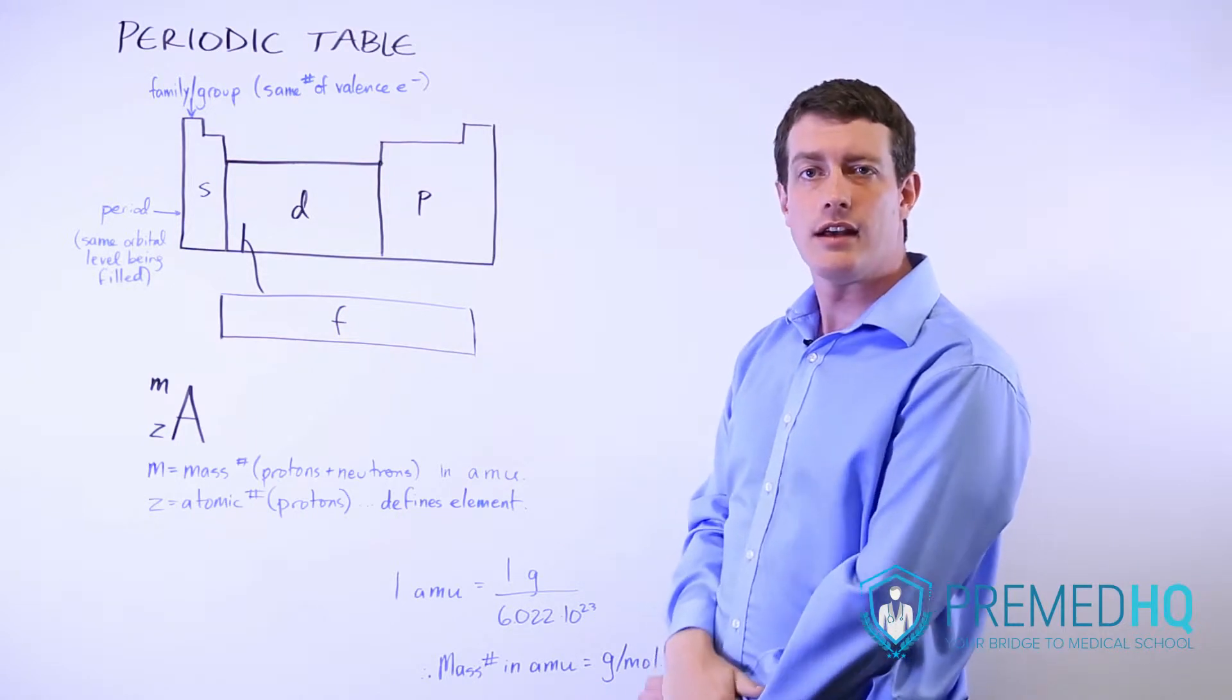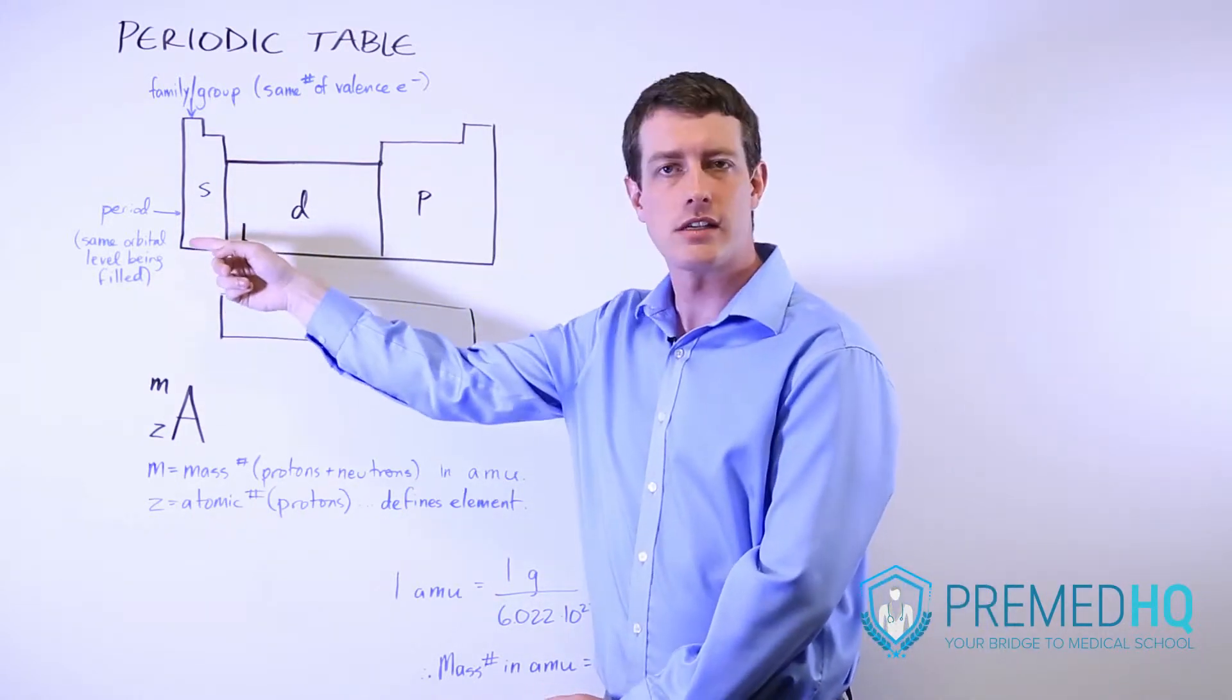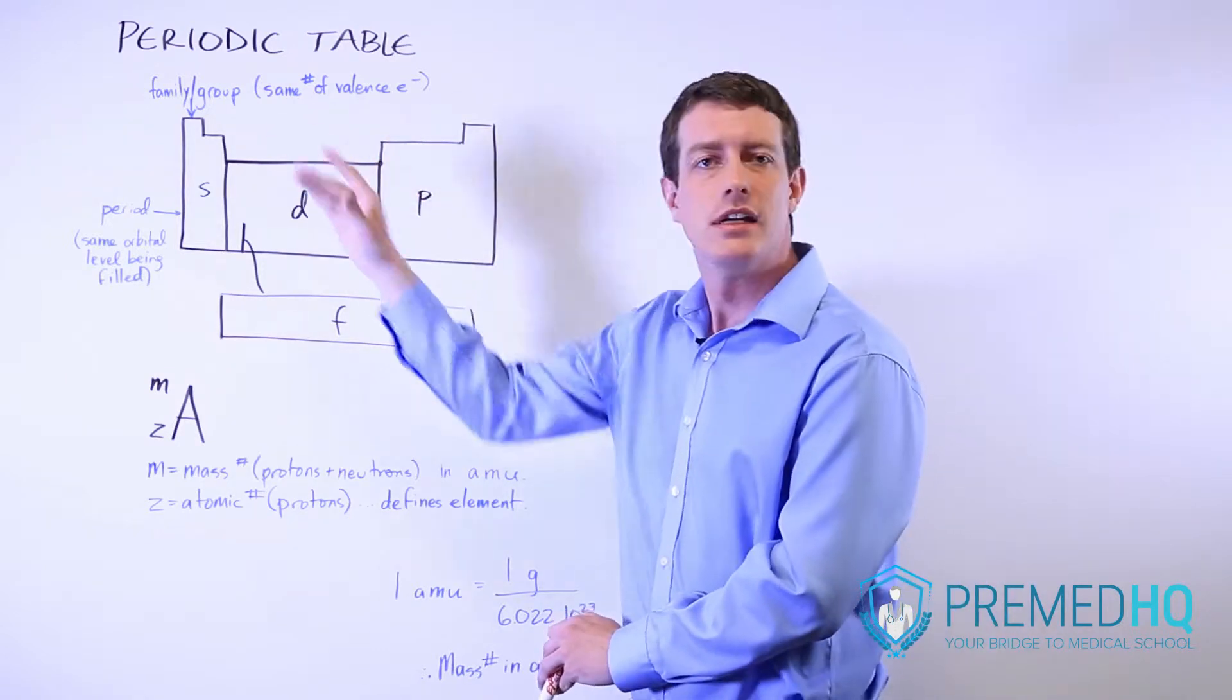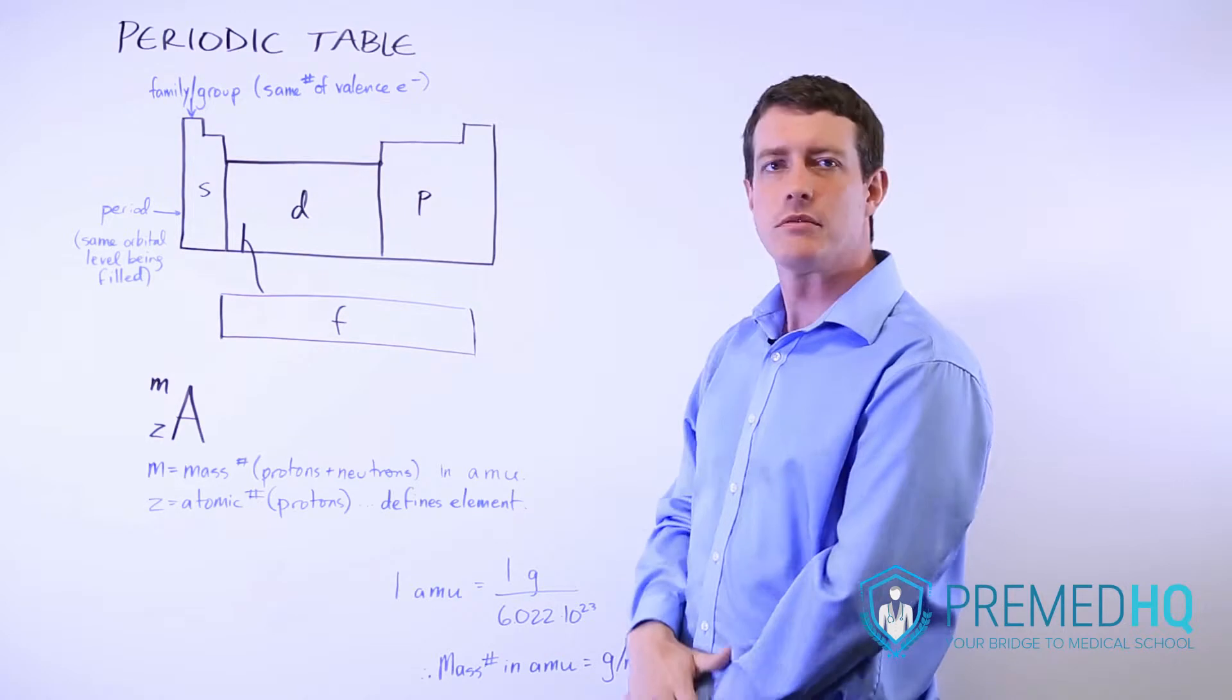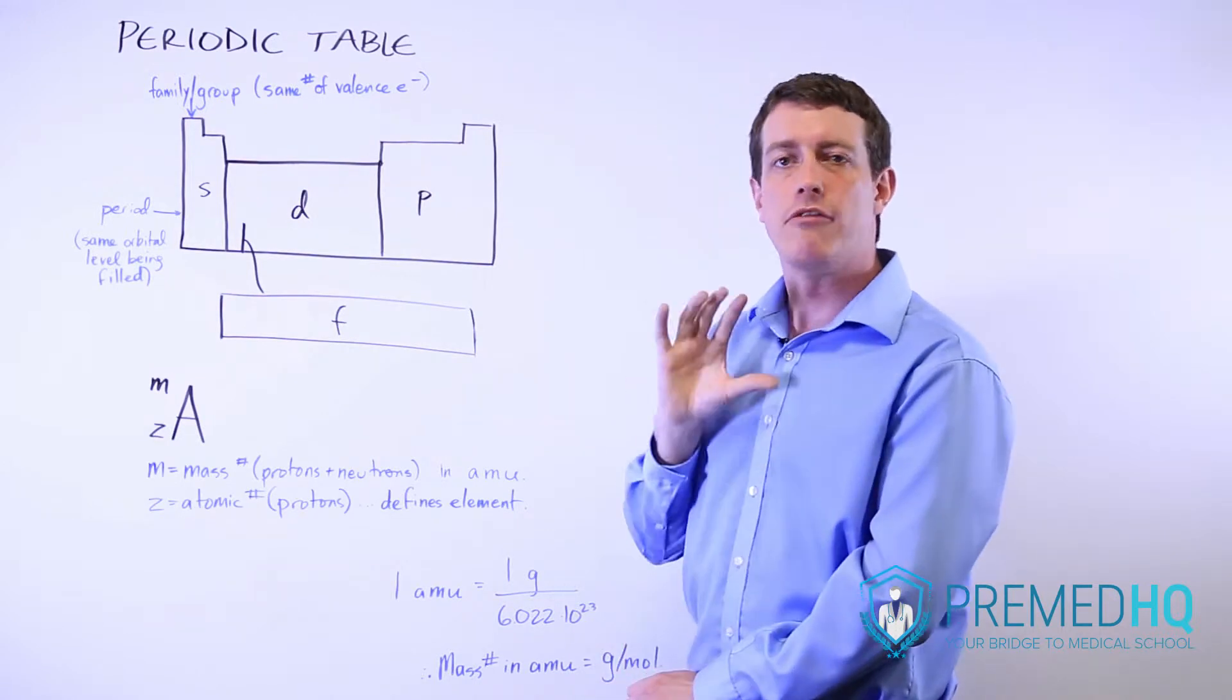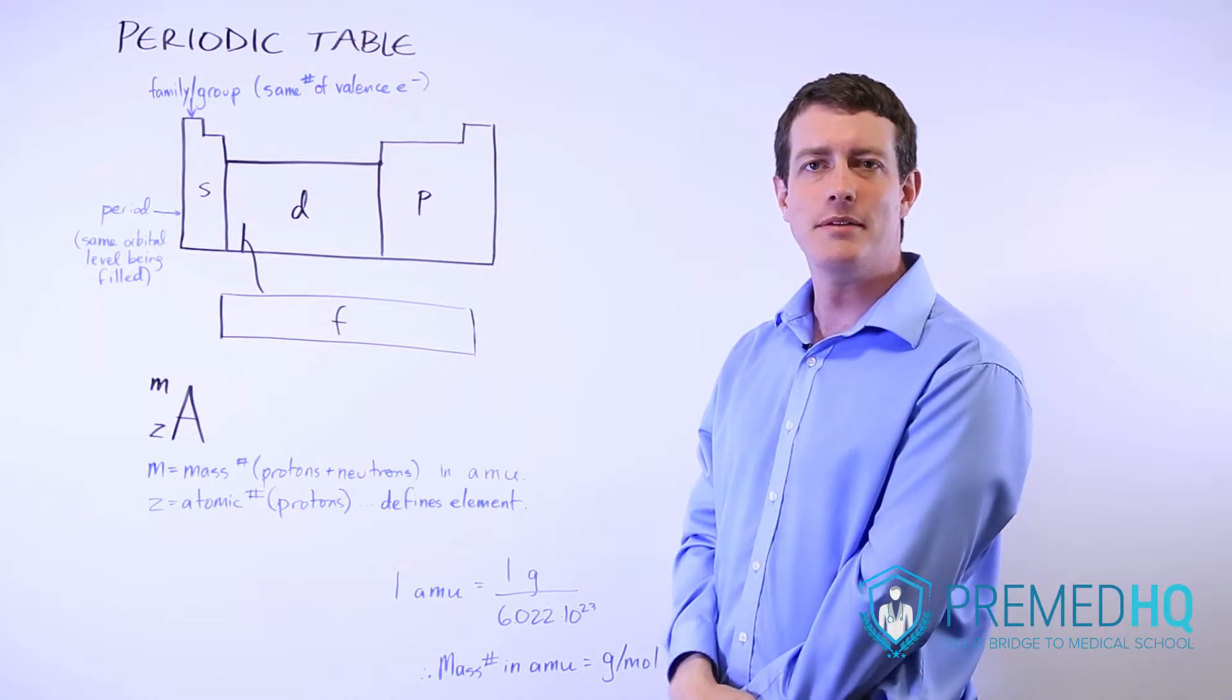If it can't do that, an atom would like to fill an entire subshell, for example the s subshell or perhaps the d subshell. If it cannot do that, then it would prefer to have half-filled subshells. So because of this desire for atoms to fulfill Hund's rules, a lot of atoms within the same family or group will have very similar qualities and be treated similarly when you're dealing with chemistry on the MCAT.